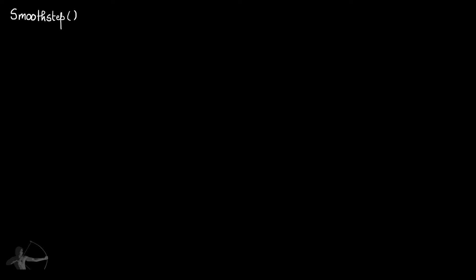Hello everyone. In this chapter we will learn about the smoothstep function. Smoothstep is one of the very important functions if you want to create fading patterns. We will first understand how the smoothstep function works and then we will understand how to use this function to create fading patterns. One of the very basic properties of the smoothstep function is that it returns a value between 0 and 1.